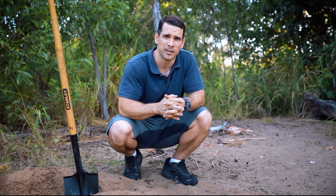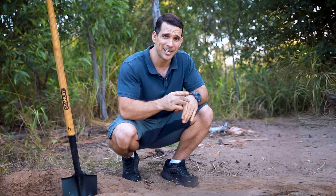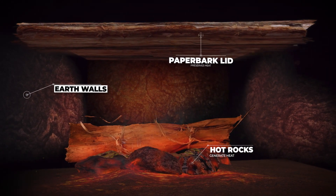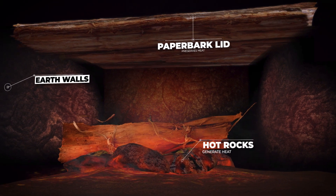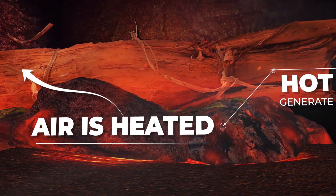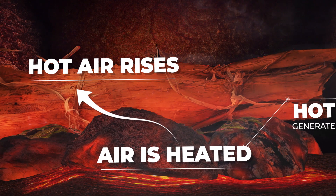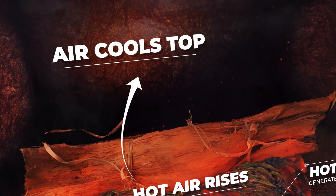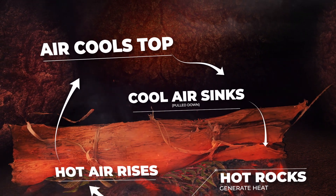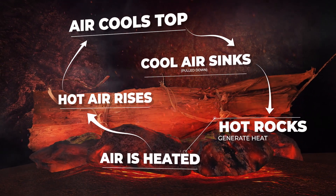The ground oven is a brilliant way to cook large quantities of food and it's a cooking method that has stood the test of time. All the heating, steaming and cooking is done underground. The secret to a ground oven's success is its ability to conserve heat generated by the rocks, while the earth and paper bark lid prevent heat loss to the outside environment. The hot rocks and embers heat up the air at the base of the oven, making it less dense or lighter. This hot air rises to the top of the oven, pulling cooler air from the top down to the bottom to replace it. This continues until heat is evenly distributed throughout the oven.